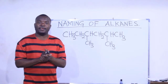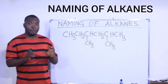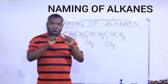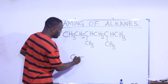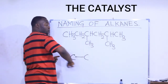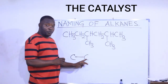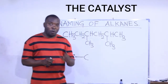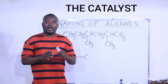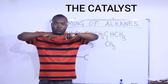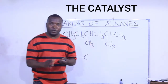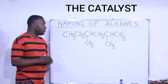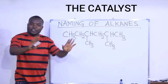In today's class we are going to learn how to name alkanes. Alkanes are those hydrocarbons that contain carbon-to-carbon single bonds. When you see only single bonds between two carbons all through the compound, and you see only hydrogen and carbon, that implies the compound belongs to the family of the alkanes — a compound with only carbon and hydrogen and only single bonds between carbon atoms.